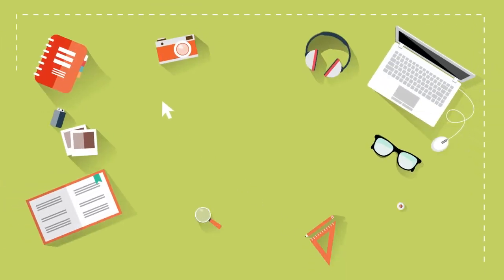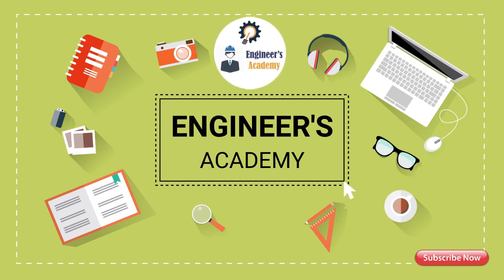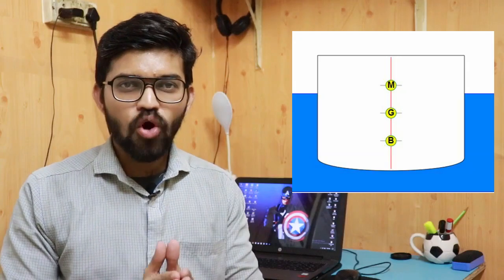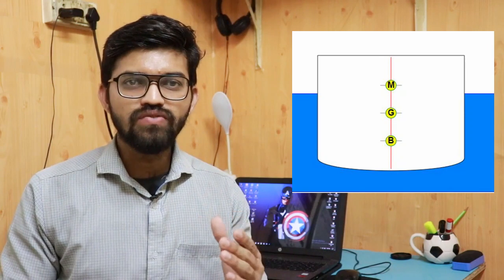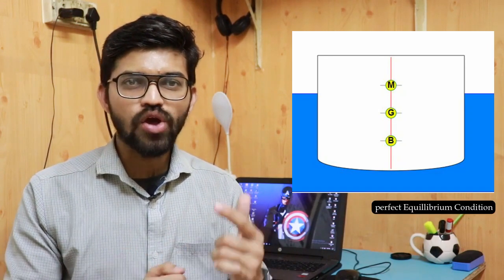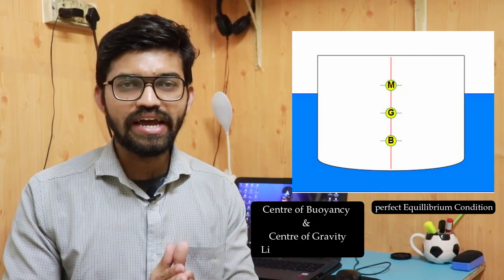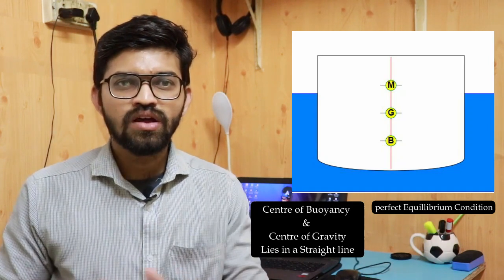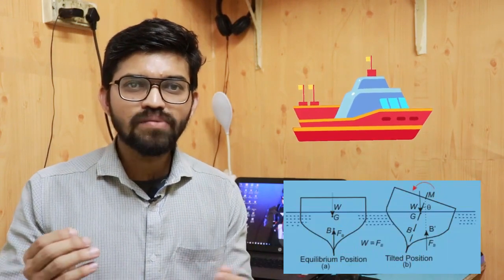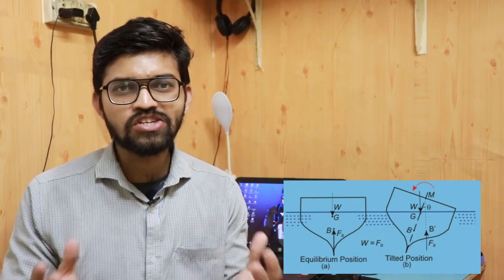Suppose a body floats on water in a perfect equilibrium condition — meaning the center of buoyancy and the center of gravity lie in a straight line. Now, consider a ship: if you notice, a ship always oscillates at sea, mainly due to the force of wind or forces from the waves, which form a couple causing the ship to oscillate.